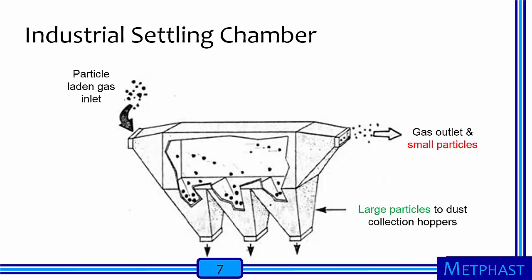Industrial settling chambers are sometimes used to clean dusty air with very large particles. The settling chamber consists of a box large enough to slow the particle-laden air. Large particles settle under the influence of gravity and are collected in hoppers at the bottom of the chamber. Small particles pass along with the airflow and out of the device. A drawback of these devices is that they have to be very large to obtain high efficiencies, but they can be very effective when used as pre-cleaners to improve the lifespan of more efficient cleaners downstream.